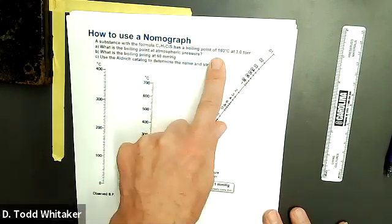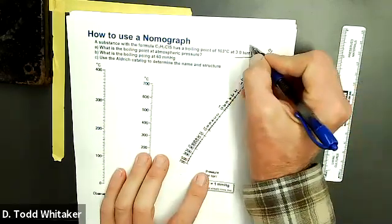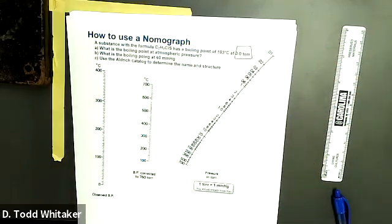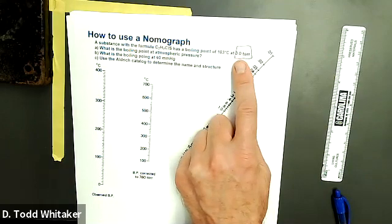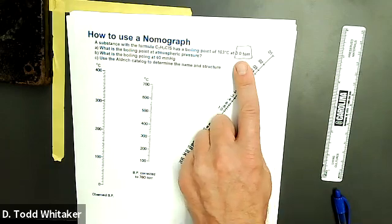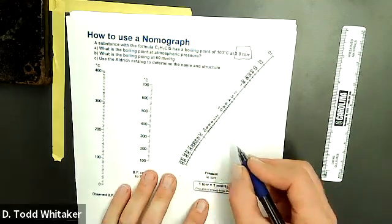But we know that this thing has a boiling point at this abnormal pressure. How do we know that's an abnormal pressure and not normal? The number's not 760 torr. So 3 torr is an abnormal pressure that's right here.